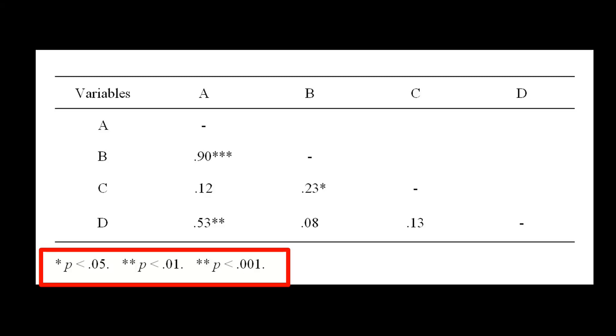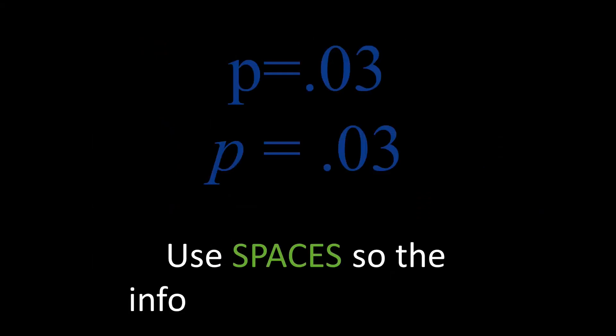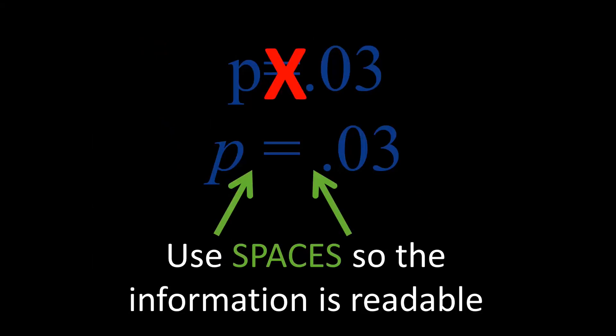Also, do not put a 0 before the decimal. Statistics that cannot exceed 1 do not need a 0 before the decimal. And use spaces so the information is readable.